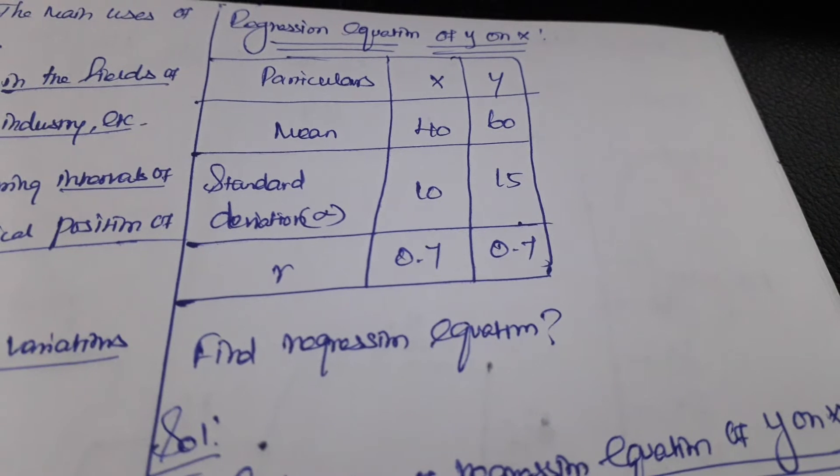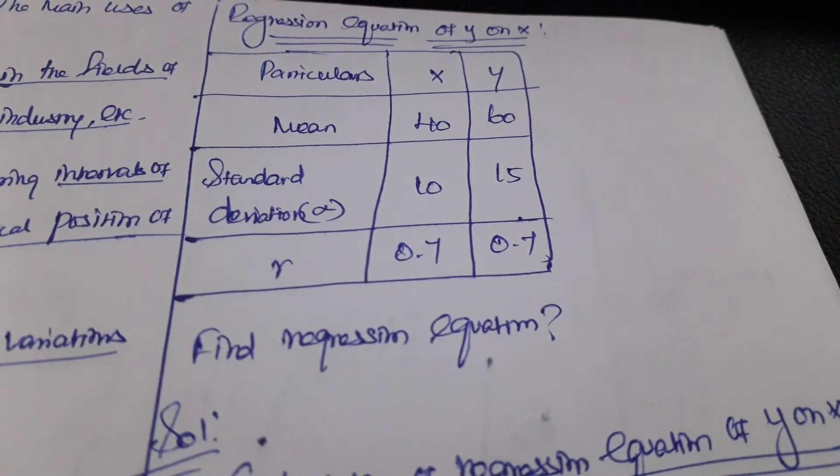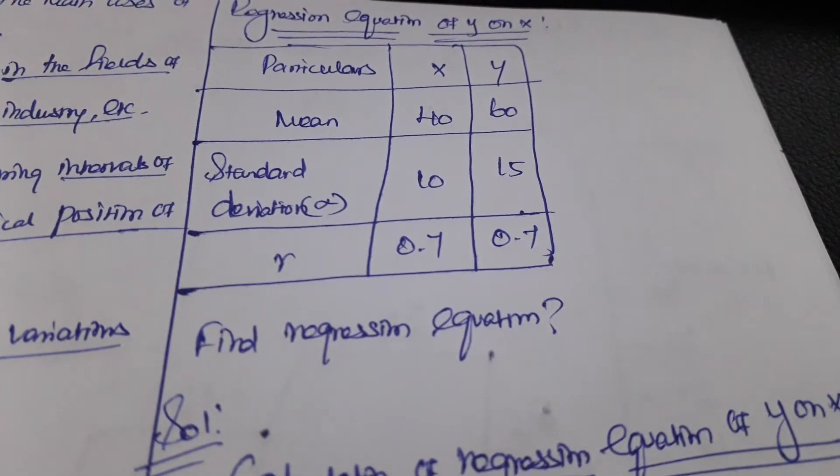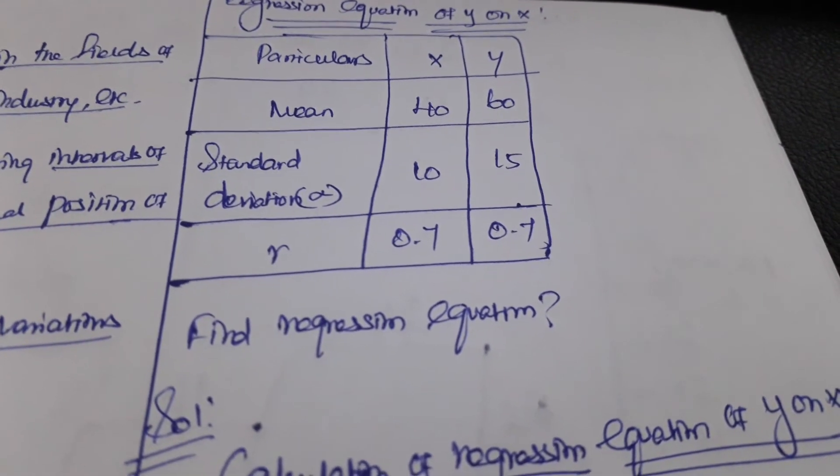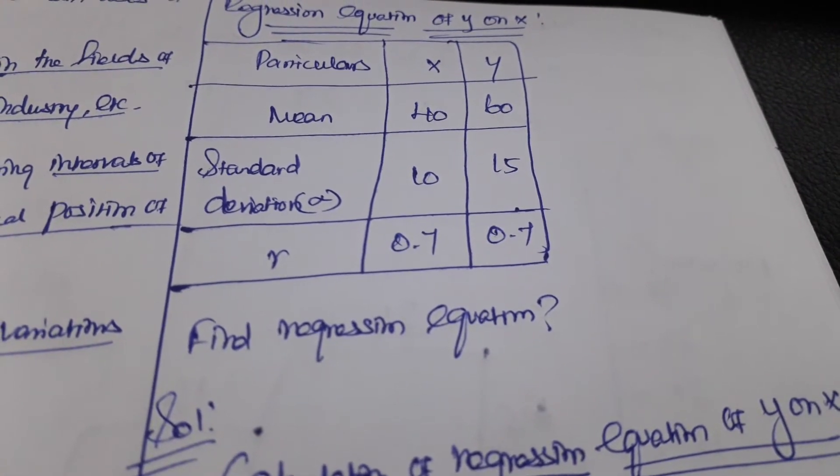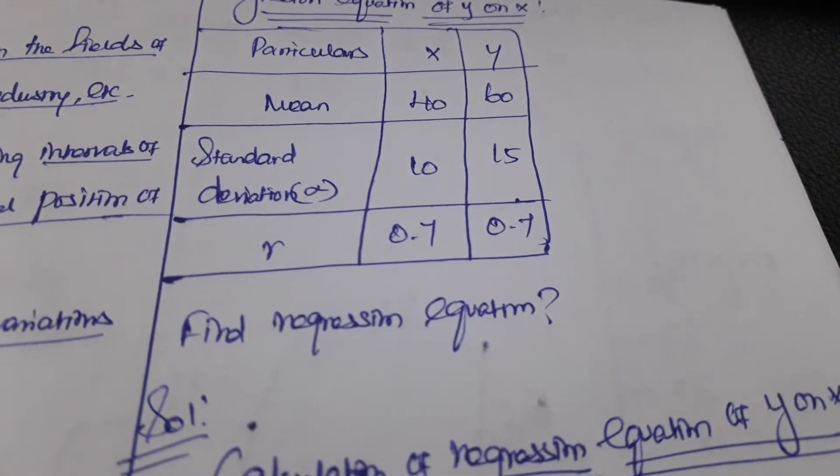So we need to find the regression equation. In the examination they don't give it in table format, and we need to make the table for that. Then we need to start solving the problem, because if it is in statement form we can get confused when solving.